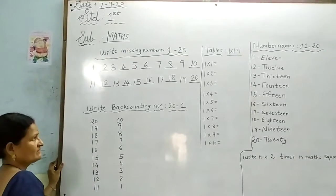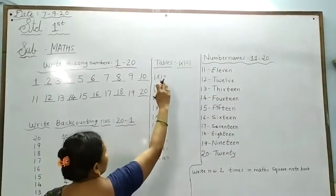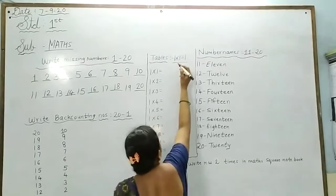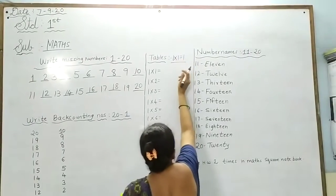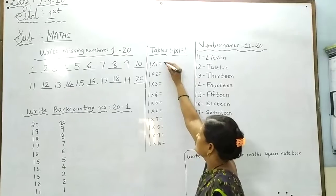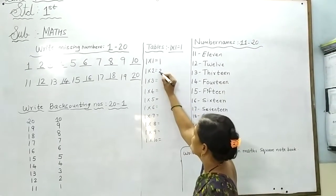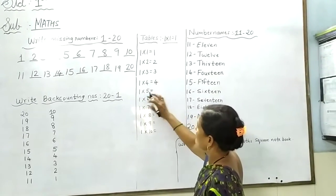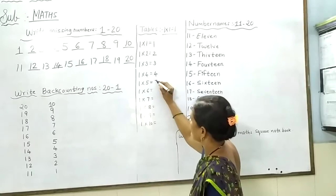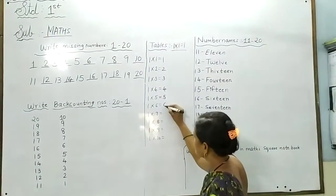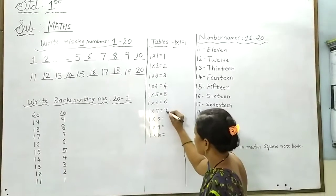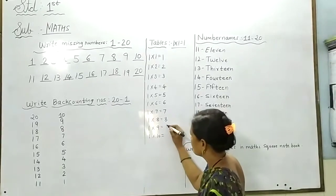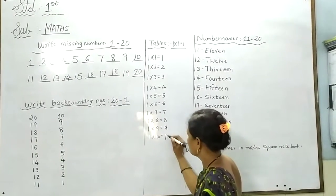We are going to do tables. One one is one. One two is two. One three is three. One four is four. One five is five. One six is six. One seven is seven. One eight is eight. One nine is nine. One ten is ten.